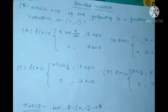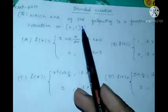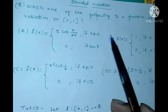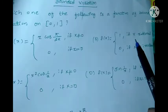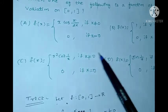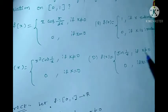For solving this question I give a trick to solve this problem within 5 seconds. Which one of the following is a function of bounded variation on the closed interval [0,1]? Option A: f(x) = x·cos(π/2x), f≠0 when x≠0, and 0 when x=0. Option B: f(x) = 1 if x is rational, 0 if x is irrational. Option C: f(x) = x²·cos(1/x) if x≠0, 0 if x=0. Option D: f(x) = sin(1/x) if x≠0, 0 if x=0.